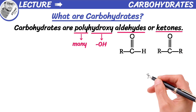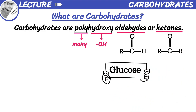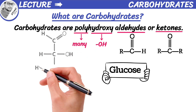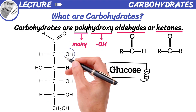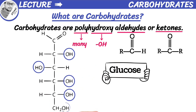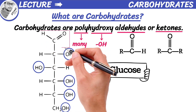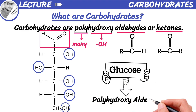For example, glucose is a polyhydroxy aldehyde because it has multiple hydroxyl groups attached to its carbon backbone and contains an aldehyde as its functional group. So we can say that glucose is a polyhydroxy aldehyde.